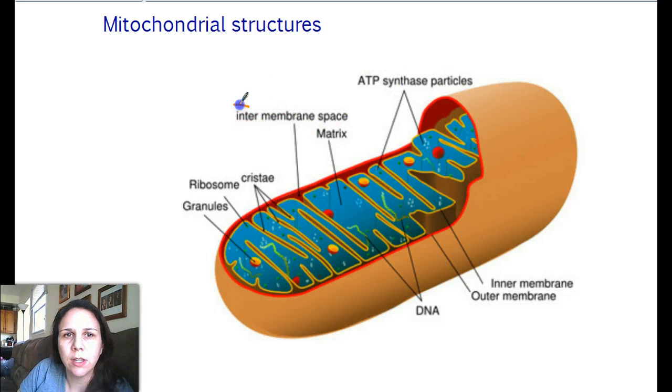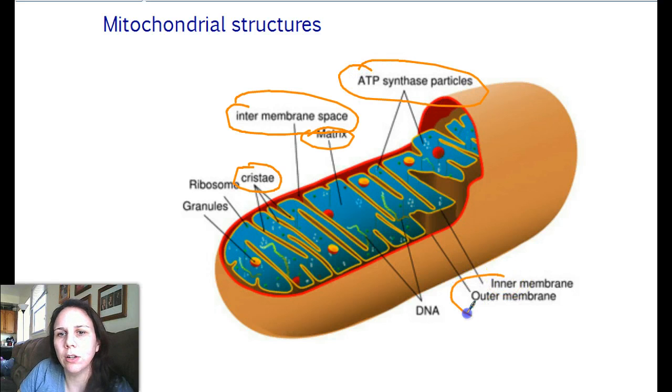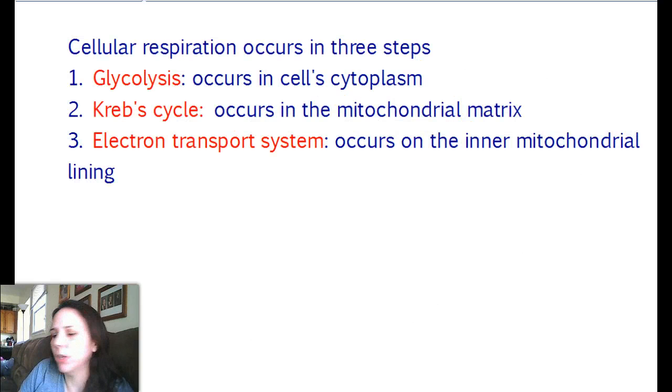So let me show you the ones that are really important. The inner membrane space is important, the matrix is important, the cristae are important, the ATP synthase is important, and the inner and outer membrane. So we don't really need to know so much about the DNA, the ribosomes, or the granules.